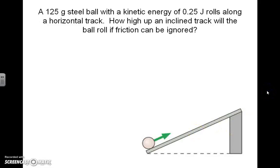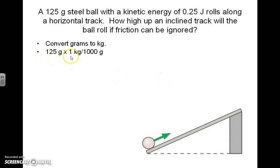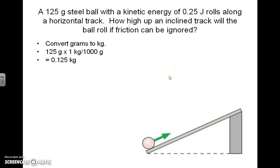To solve this problem, you're first going to want to get the mass of the steel ball into kilograms so that it will work in a formula. In order to convert grams to kilograms, you would multiply the 125 grams by 1 kilogram per 1,000 grams — in other words, divide by 1,000. You can move the decimal place three places to the left, giving you 0.125 kilograms.